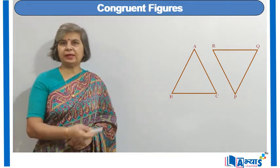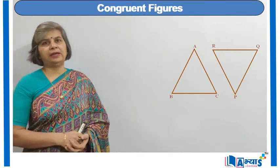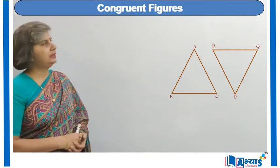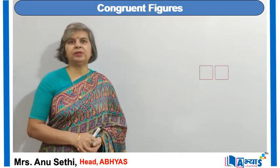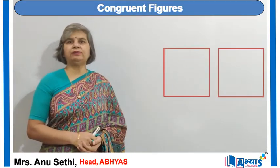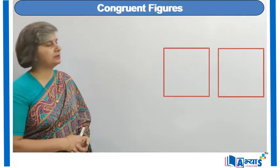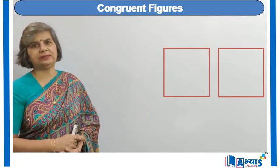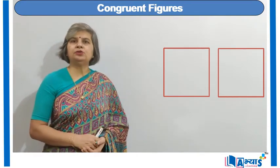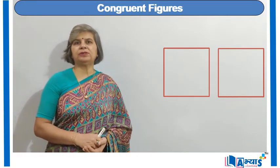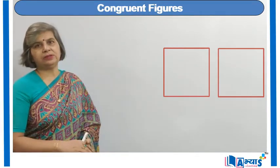We can say that both the triangles should be of the same size and same angles — only then will they overlap each other. Similarly, if we have two squares with the same edge length, let it be x centimetres, both the squares have the same side x centimetres, so both the squares are congruent to each other, because one square will overlap the other.